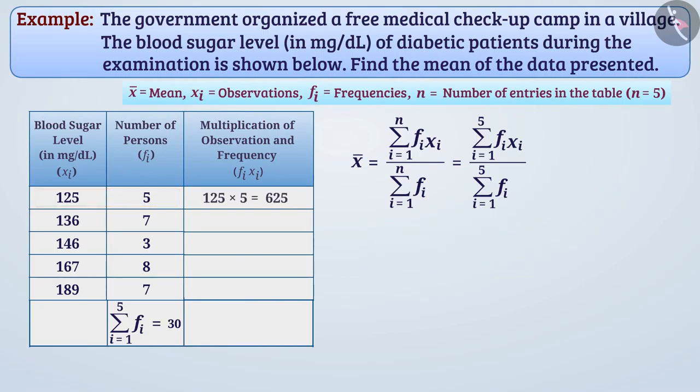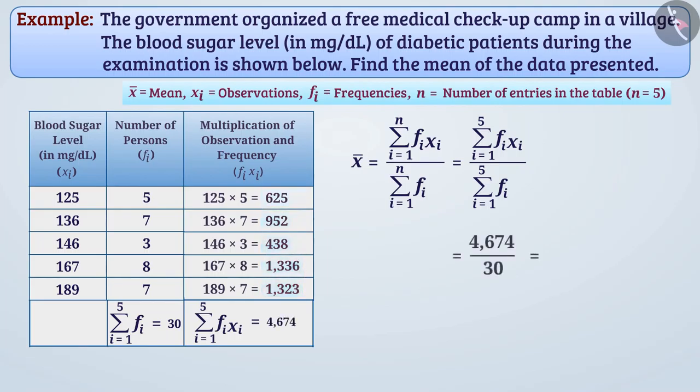Similarly, we will find fi multiplied by xi for other observations. We will find the sum of fi·xi where i ranges from 1 to 5, which will be 4674. In this way, mean is equal to 155.8.